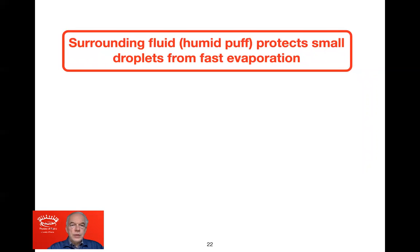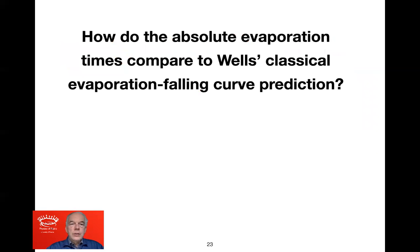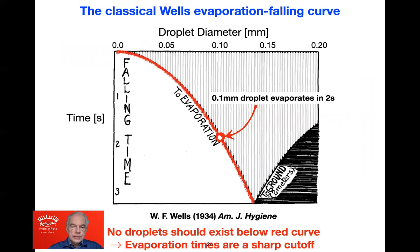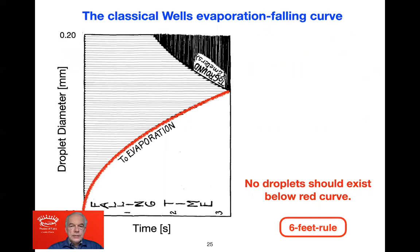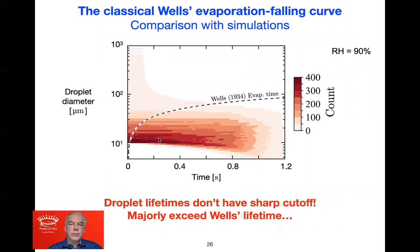We can conclude that the surrounding fluid — the human puff — protects small droplets from fast evaporation. How do the absolute evaporation times compare to Wells' classical evaporation-falling curve? Rotating Wells' plot by 90 degrees, droplets now fly to the right with time, with the ground above. Small droplets should evaporate and no droplets should exist in that domain. But comparing this curve with our numerics shows a very different result on a log scale: many small droplets exist when according to Wells they should not.